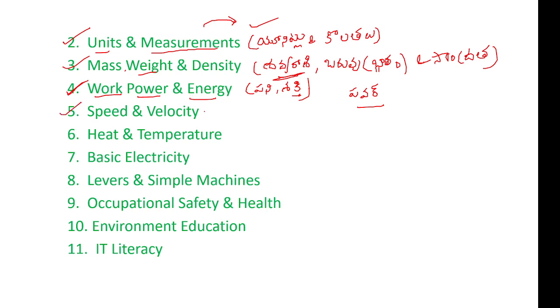In the fifth unit: speed and velocity. Speed and velocity are different concepts. Velocity is a vector quantity, while speed is a scalar quantity. Acceleration, displacement, and torque are also covered. Speed and velocity will be different — their formulas will be different — but applications will be explained. We will be able to use these concepts.